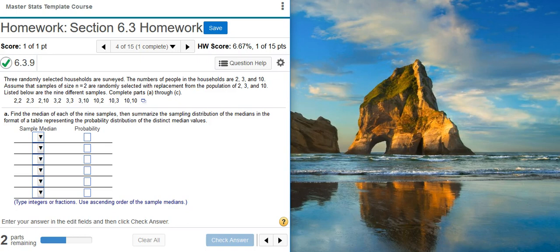Here's our problem statement. Three randomly selected households are surveyed. The numbers of people in the households are 2, 3, and 10.